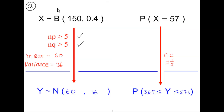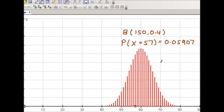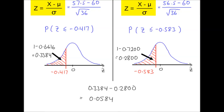The exact probability using the binomial distribution, obtained from a computer model without any approximation, is 0.05907. This is very close to our approximation, confirming that this is a very good approximation.